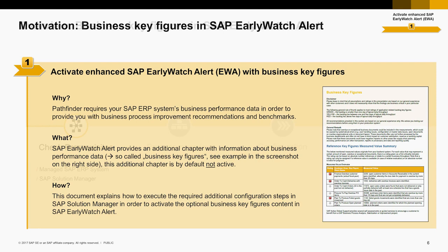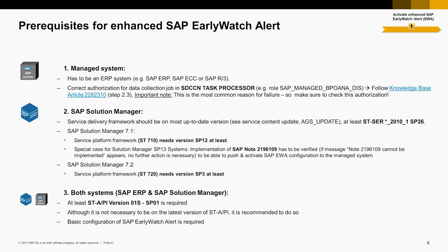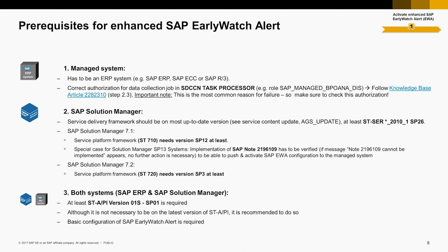Let's now have a look at the prerequisites. The most important prerequisites for Enhanced EWA are SAP Solution Manager 7.1 Support Package 12 or higher, or SAP Solution Manager 7.2 Support Package 3 or higher. In addition, you need STAPI version S Support Package 1 or higher for SAP ERP and Solution Manager. One typical pitfall for customers are incorrect authorizations for the data collection job. Make sure to follow the Pathfinder Manual and Knowledge Base Article 2282310 Step 2.3 before you proceed.